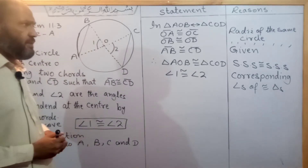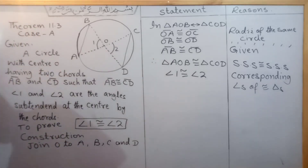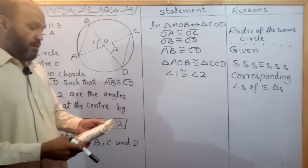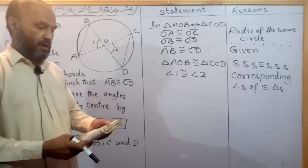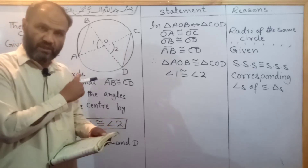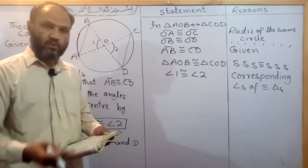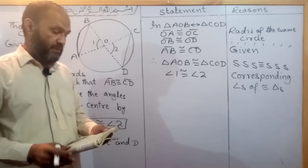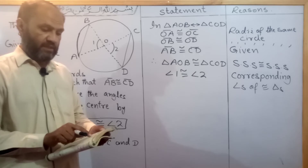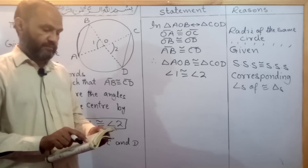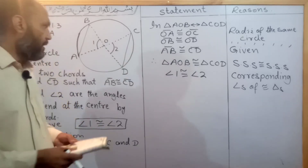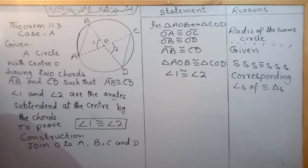In Case B, equal chords of two congruent circles subtend equal angles at the centers. The two circles will be considered together, with centers of the two circles identified.